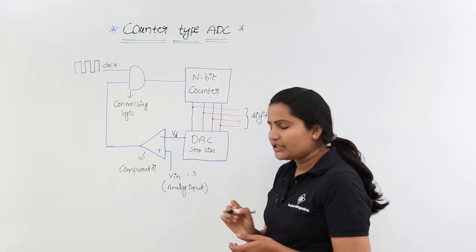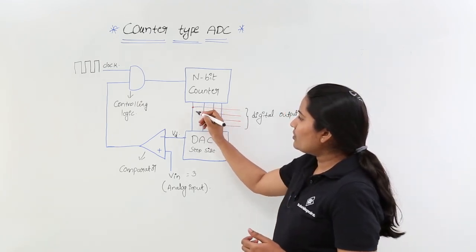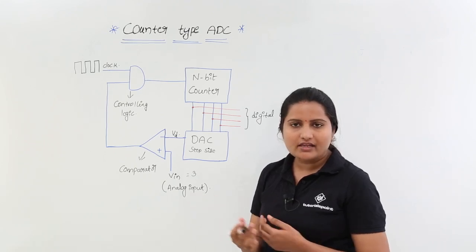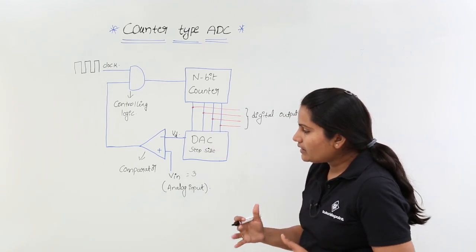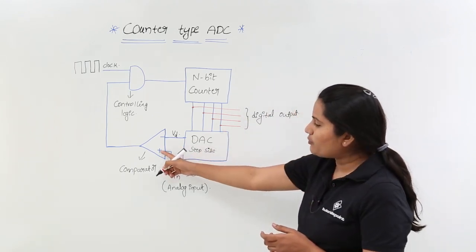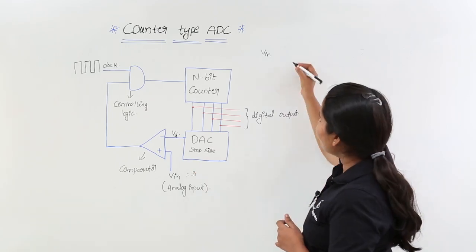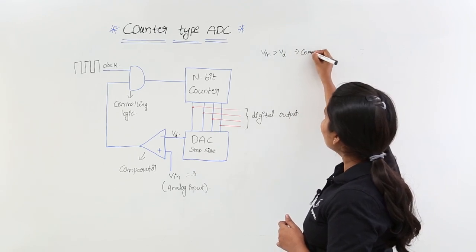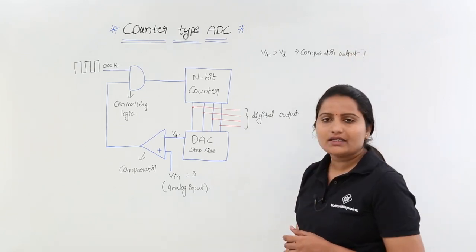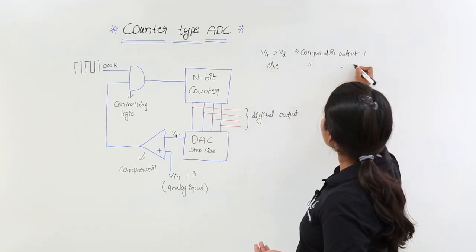Taking an example: suppose our input voltage VIN equals 3. We switch on this circuit. Now whenever VIN — the positive voltage at the comparator — is greater than VD, the comparator output is 1. Whenever positive voltage is greater than negative voltage it provides 1; otherwise the comparator output is 0.